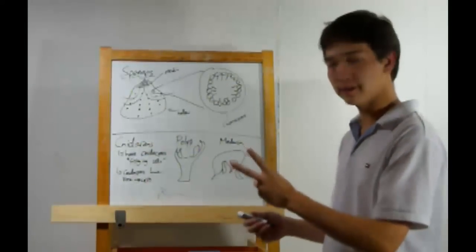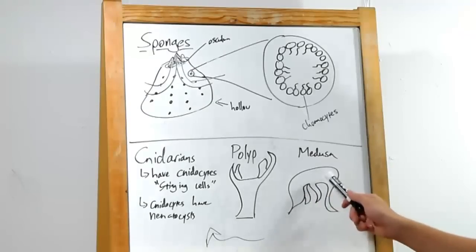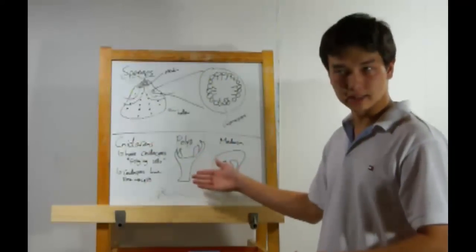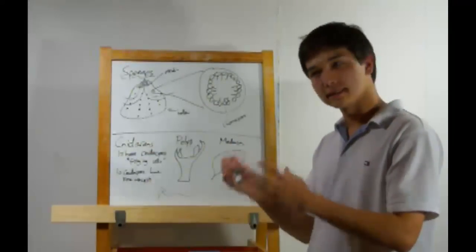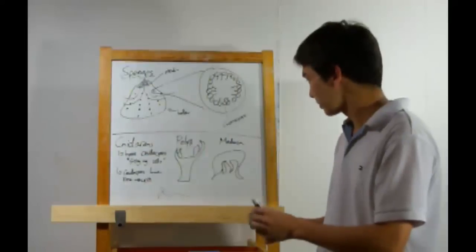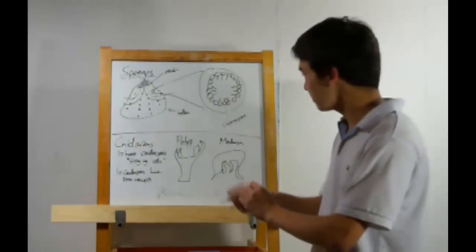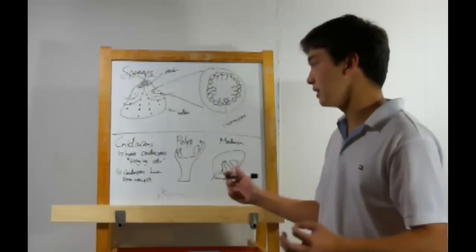Most cnidarians have two phases in their lives, polyp and medusa. As a polyp, you can see this looks kind of like a sea anemone. They're sessile, that means they don't move. These tentacles out here, they contain the cnidocytes.